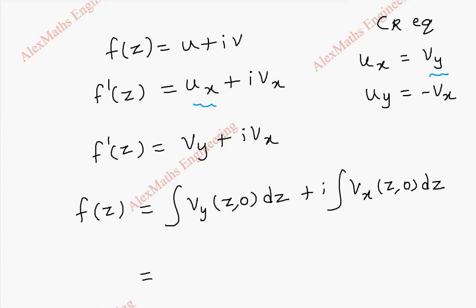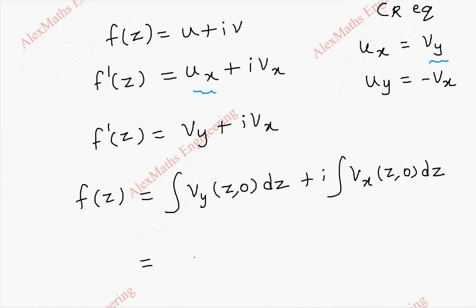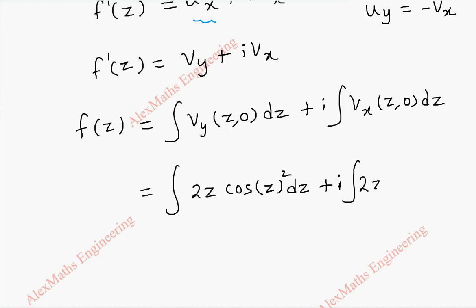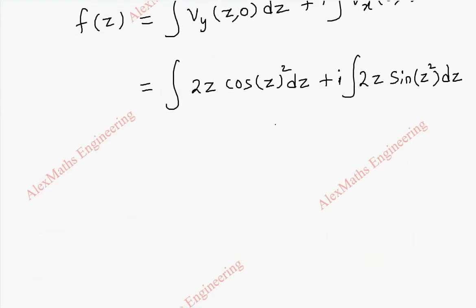Now we substitute vy, which is 2z cos z squared: integral of 2z cos z squared dz, plus i times the integral of vx, which is 2z sin z squared dz, plus c. We go for substitution. Let t equal z squared, so dt equals 2z dz. For the second term we also let u equal z squared, so du equals 2z dz.